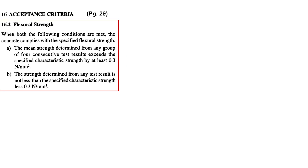As per Clause 16.2, when both the following conditions are met, the concrete complies with the specified flexural strength. The mean strength determined from any group of four consecutive test results exceeds the specified characteristic strength by at least 0.3 N/mm². And the strength determined from any individual test result is not less than the specified characteristic strength minus 0.3 N/mm².